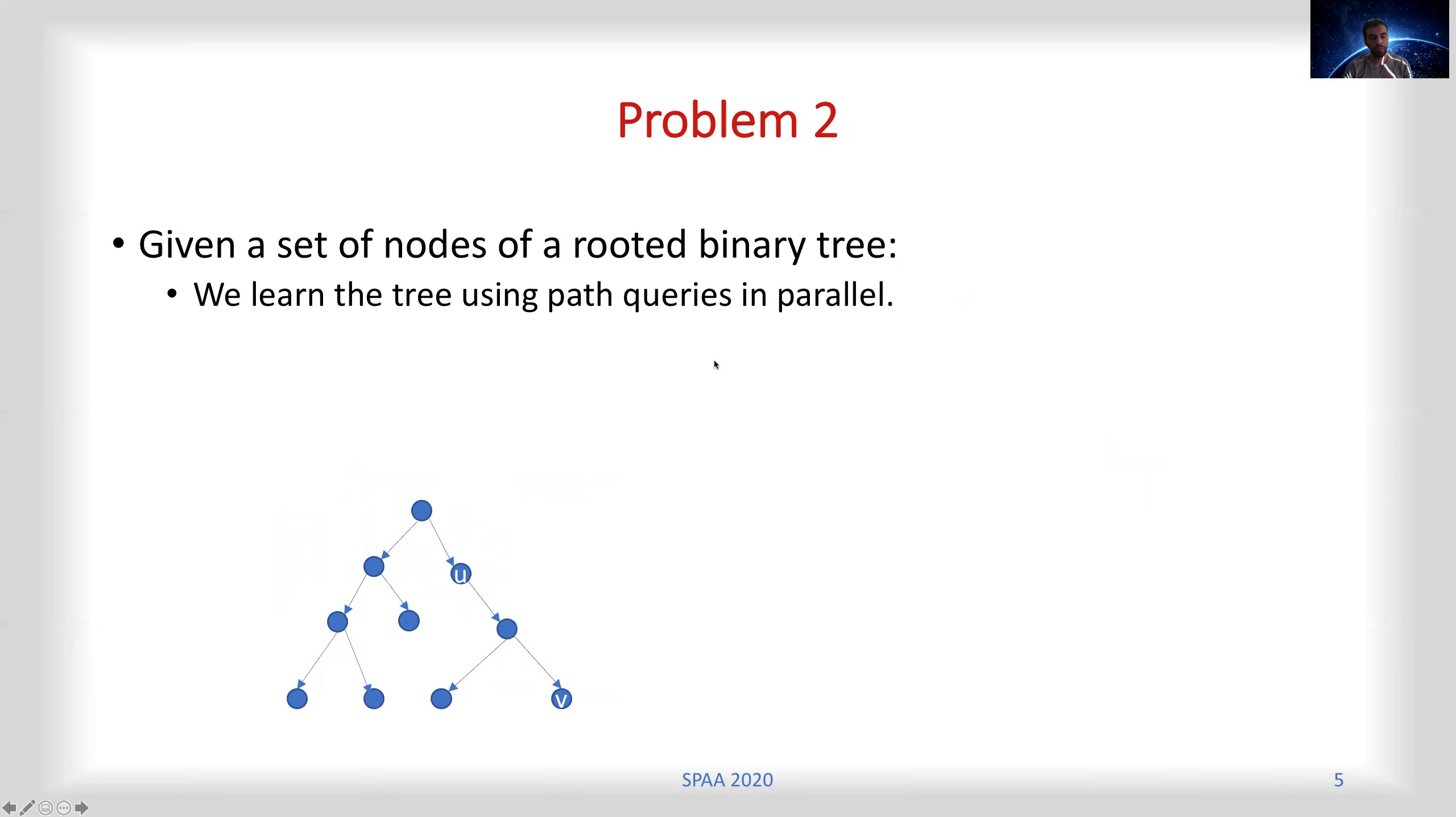The second problem is that we are given a set of nodes of a rooted binary tree and we want to learn the tree using past queries or ancestor queries. Each past query or ancestor query takes two nodes like u and v and returns true if u is an ancestor of v.